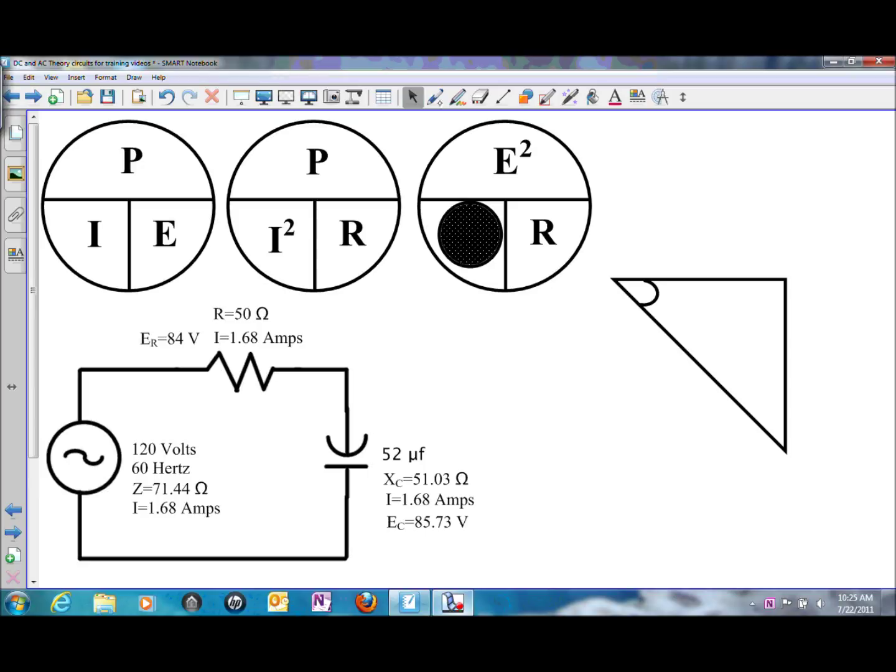So what I did is I used I times E all the way around. So P is going to be equal to I times E. The first one I'll do is the resistive power or your true power.